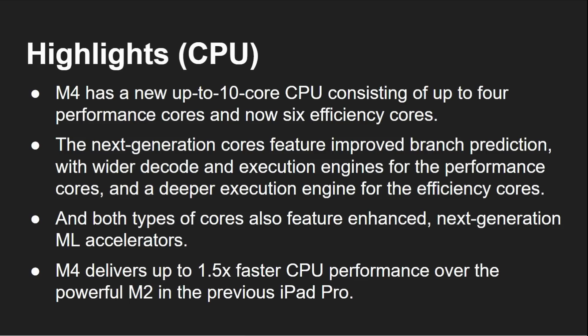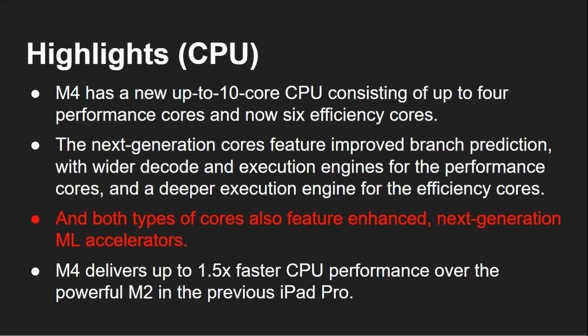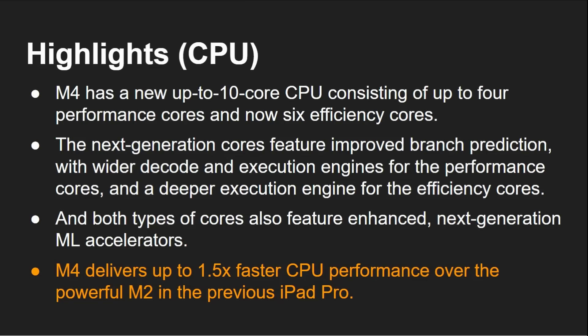Let's go through some of the highlights of the CPU part of the new M4 processor. The M4 has up to 10 cores, consisting of up to four performance cores and six efficiency cores — an upgrade from the M3, which was four plus four. It features improved branch prediction with wider decode and execution engines for the performance cores, and a deeper execution engine for the efficiency cores. Both types of cores also feature enhanced next-generation ML accelerators, which is a really important point we need to understand.